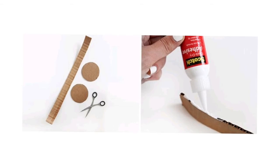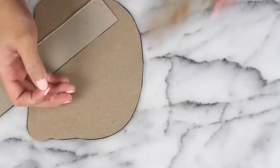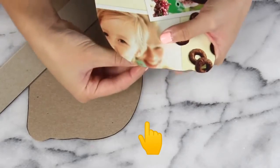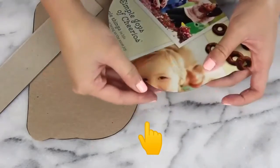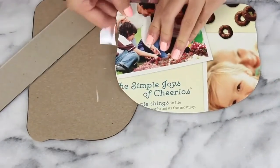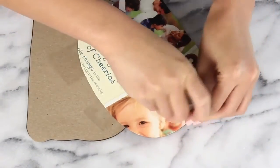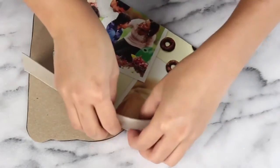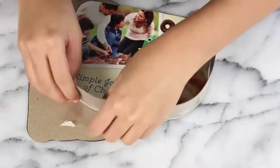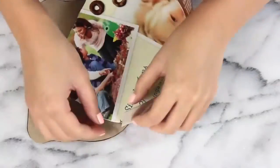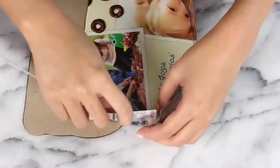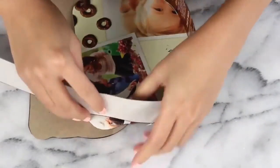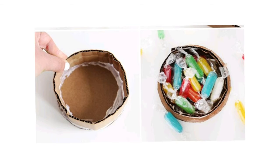If you don't want to use glue you can use tape, and this is the way how you use the tape: you can stick the tape around the edges of the circle and then you can stick it to the strip of the cardboard. If you have finished, before you repeat this step again on the other side of the circle, you can fill the base of your piñata with candies or toys.